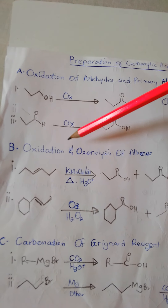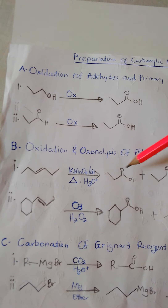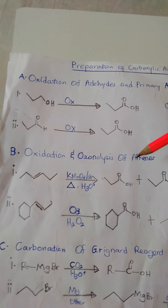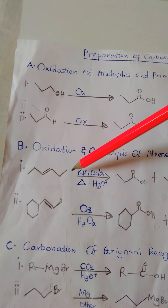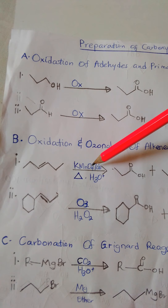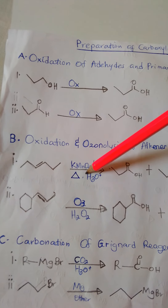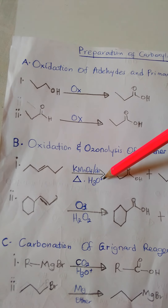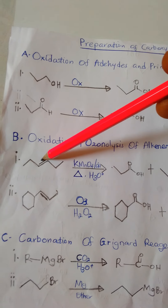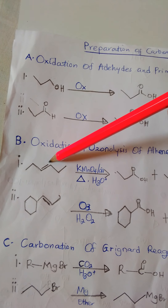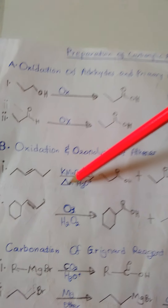The next preparative method of carboxylic acids is oxidation and ozonolysis of alkenes. If you have an alkene and you add potassium permanganate in base with heat, followed by hydrolysis, there is going to be an oxidative cleavage. The carbon joining the double bond will cleave to give carboxylic acids.